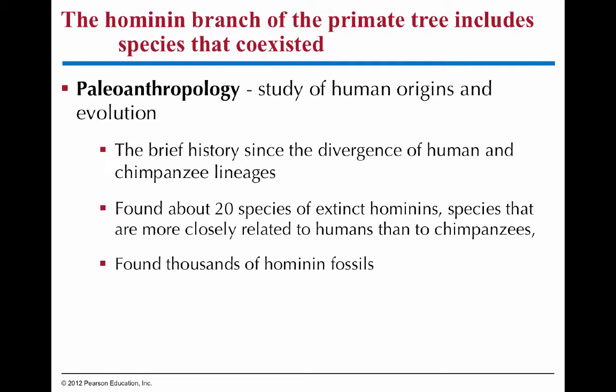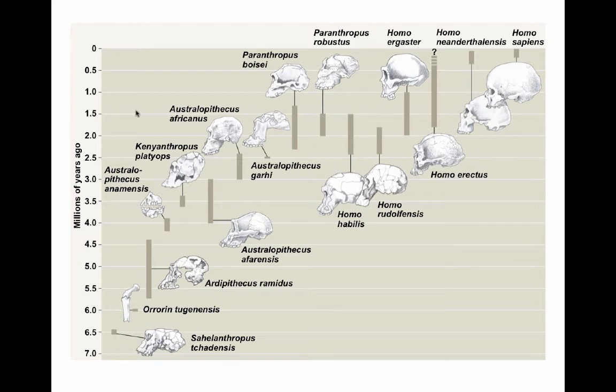New stuff is coming up all the time, so we shift some of our hypotheses — which is totally expected and rather exciting. Paleoanthropology is a really hot field. We have about 20 species of extinct hominins and the only hominin left is Homo sapiens. Examples of hominin species include Australopithecus, Ardipithecus, and then all the different types of the Homo genus including Homo sapiens.